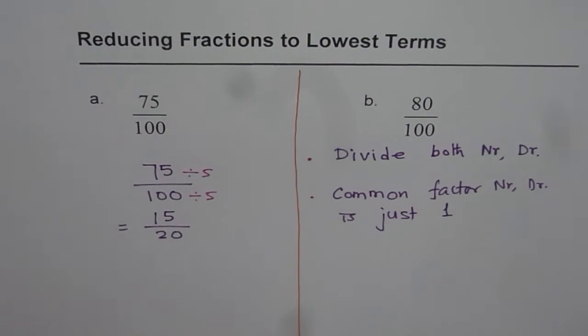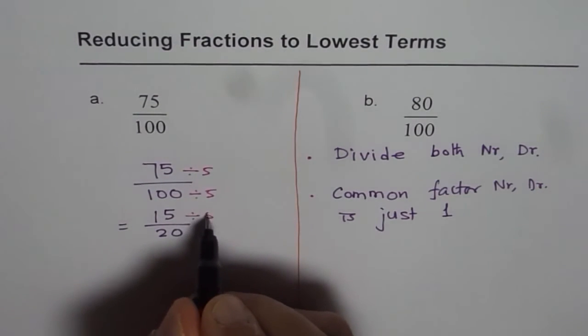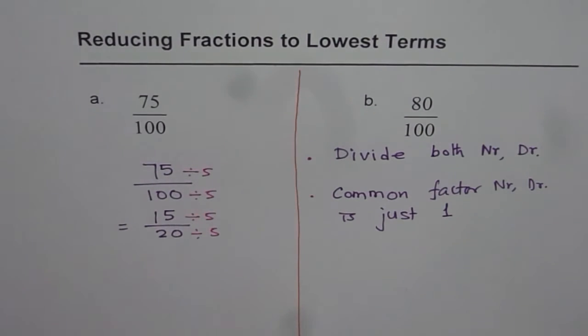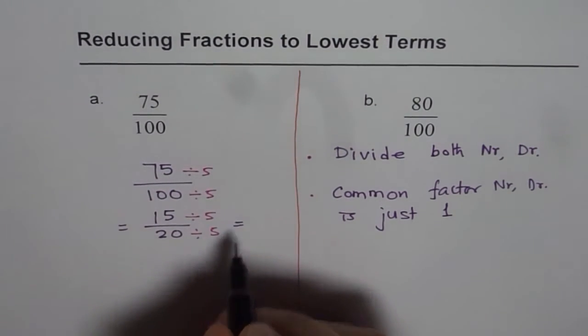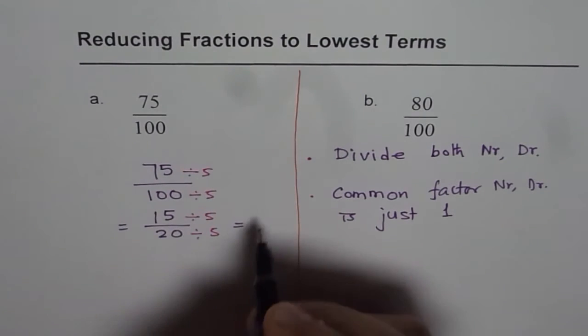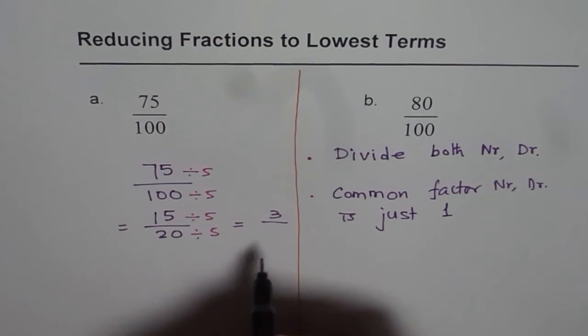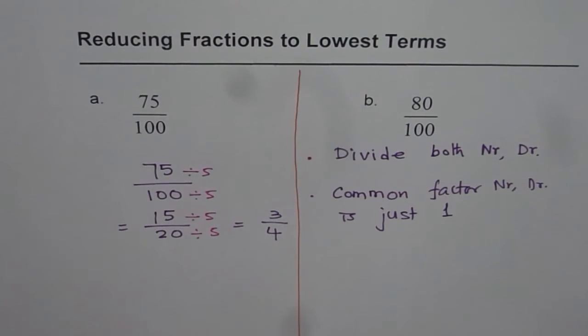They can further be divided by 5. So, let's again divide by 5, both numerator and denominator. In that case, what do you get? 15 divided by 5 is 3. 20 divided by 5 is 4. So, we get 3 out of 4.